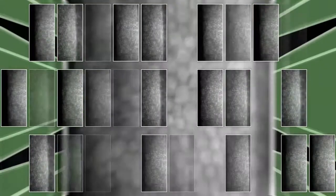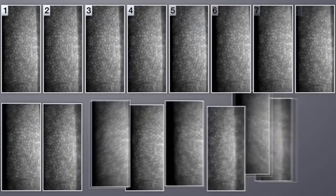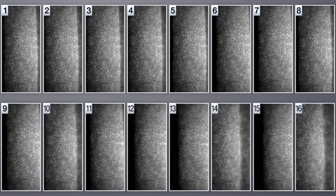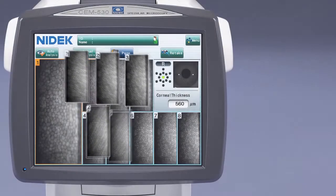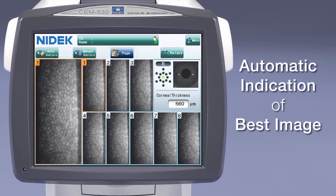Within each imaged area, many images are captured. Then, 16 images are automatically selected and sorted based on their individual quality and ability to be analyzed. These images are presented 8 at a time on the touchscreen for easy selection of the desired image.